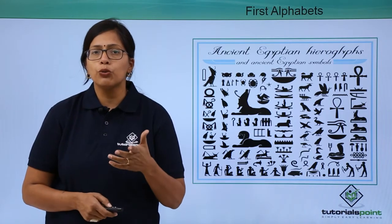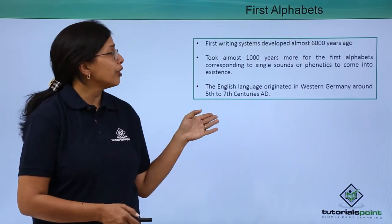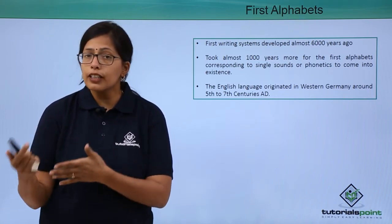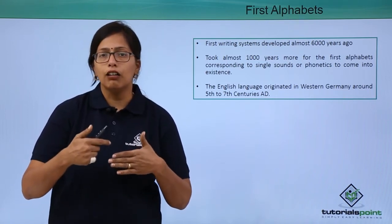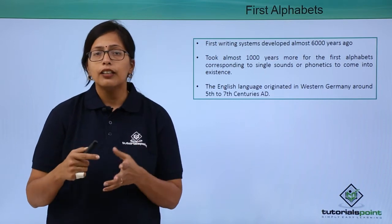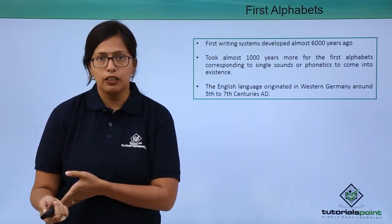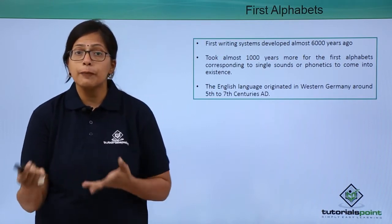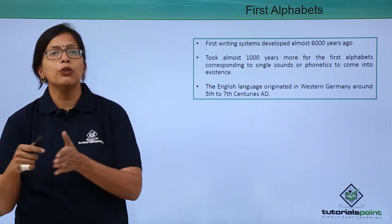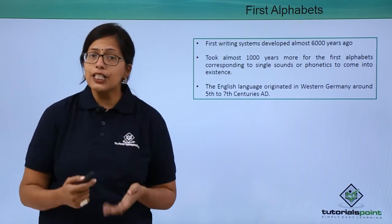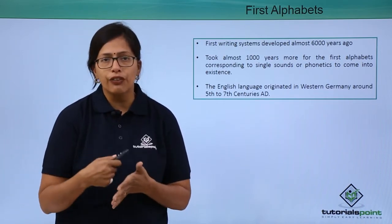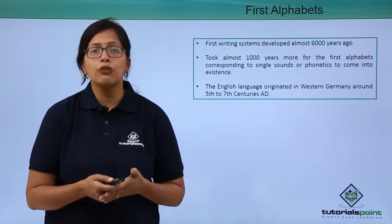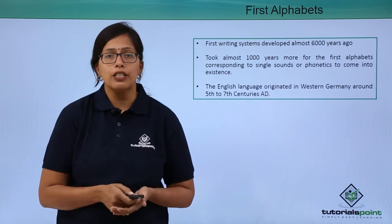The alphabets that we know today took another 1,000 more years to develop, because we speak in the form of single phonetics. For example, if I speak 'a', that is one sound, and there is an alphabet 'a' associated with it. If I say 'per', there is a single alphabet associated with it, which is P. The English language we use today for writing, speaking, and communication was developed in Western Germany around the 5th to 7th centuries AD.